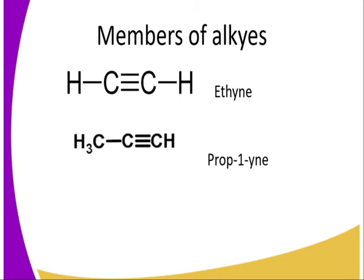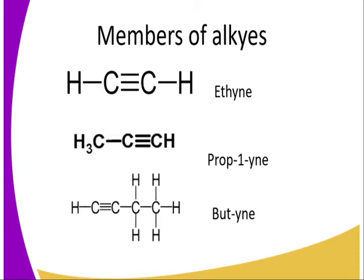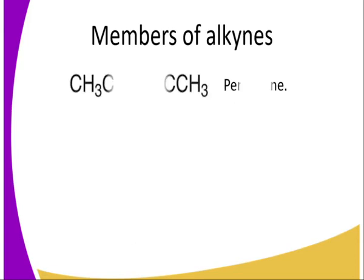Member number 2 is prop-1-yne, having 3 carbon atoms and the triple bond along that chain. Member number 3 is but-1-yne. Remember, the triple bond can be along each of these carbons — it can be at carbon number 1 or carbon number 2, and hence we can have different names referring to the position of the triple bond.